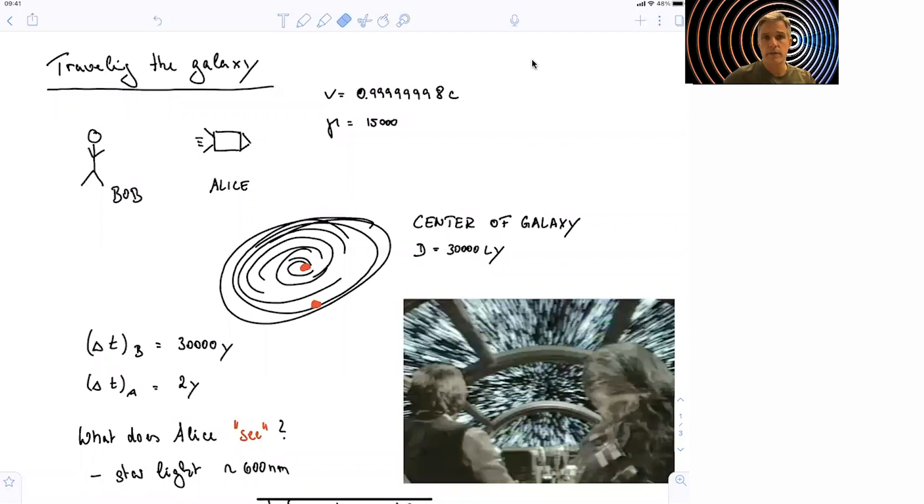We take on traveling through the galaxy from here, from Earth, towards the center of the galaxy. The situation is as follows: We have Bob, who's stationary on our planet Earth, and Alice, who makes use of a new spacecraft. That spacecraft is able to travel with a velocity of 0.99999998 times the speed of light. So that's really fast. Corresponds to a gamma factor of 15,000.